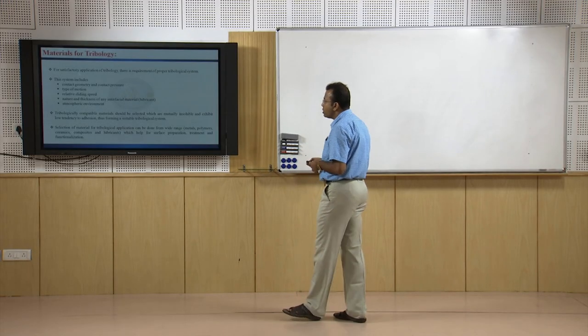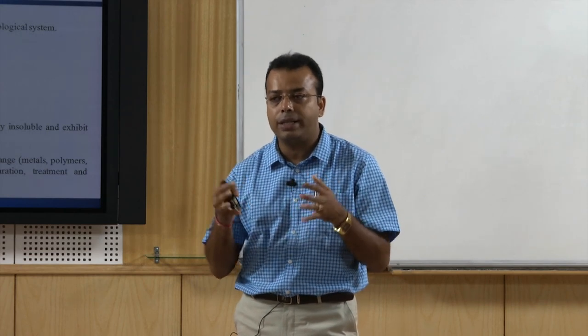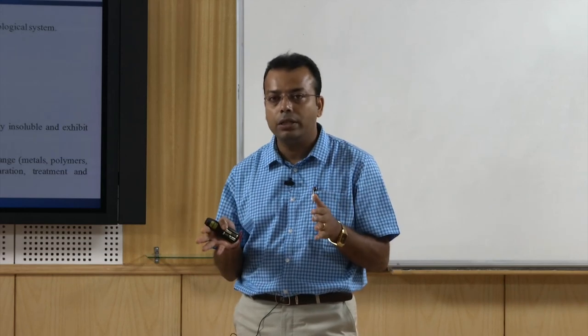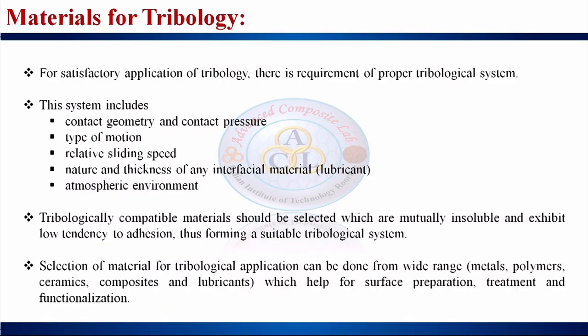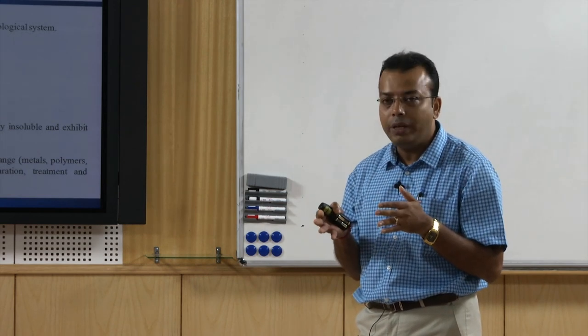For satisfactory applications of tribology, a proper tribological system is required. Any type of material can be used, but it should have the capability to generate less friction and less heat so that material properties are not diminished. The system includes contact geometry, contact pressure, type of motion, relative sliding speed, nature and thickness of any interfacial material, and atmospheric environment.